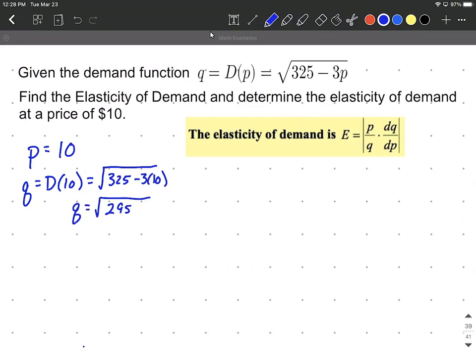Now we need to calculate DQ DP. Remember, we said that's the same thing as the derivative of D with respect to P. So to do so, what I'm going to do is first think about this as being raised to the one half power. So our original function, 325 minus 3P, all raised to the one half power.